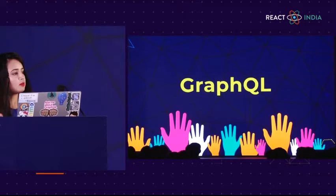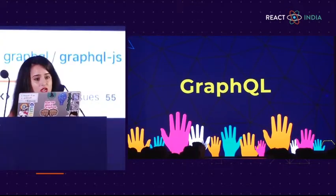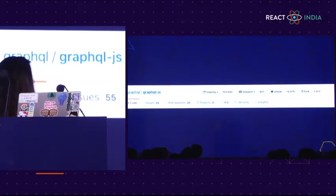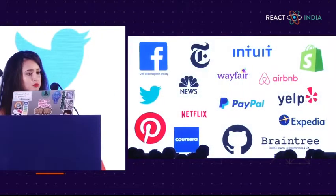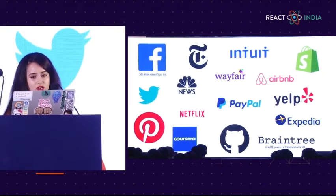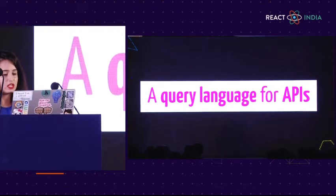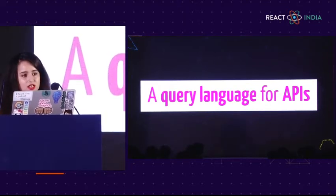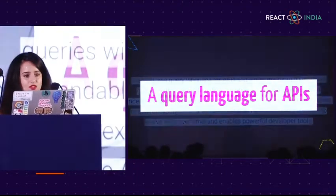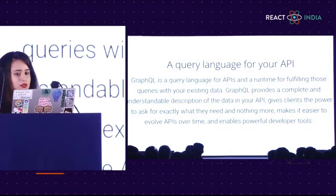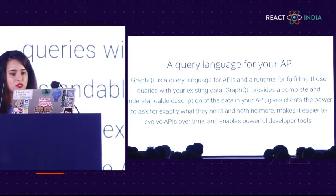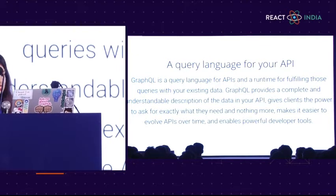Now let's look at how GraphQL changes things. GraphQL is really popular these days — it's used by 153,000 people and by a lot of big companies like Facebook, PayPal, Twitter, Coursera, and others. GraphQL is a query language for APIs — it's a way of defining how to fetch information. It's not a query language for databases; it's a query language for how to talk to an API. It uses a type system to ask for data and is strongly typed. GraphQL provides a complete and understandable description of the data in your API, giving clients the power to ask for exactly what they need and nothing more.